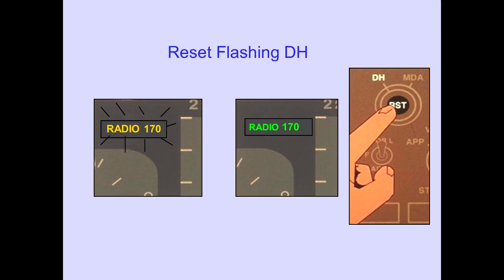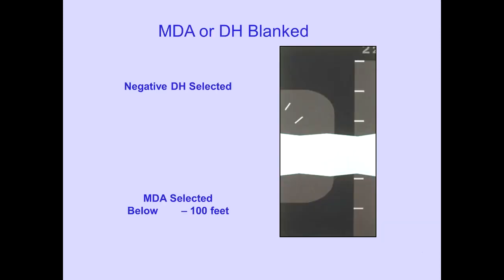The flashing radio altitude is reset automatically on go-around at 75 feet above the set decision height, or decision height can be reset manually. Selecting an MDA lower than minus 100 feet, or inserting a negative value for DH, will remove the respective display.